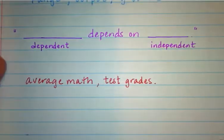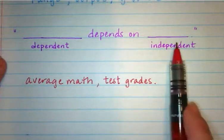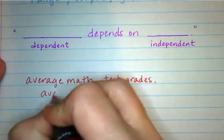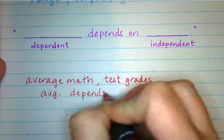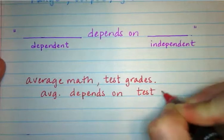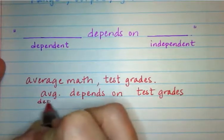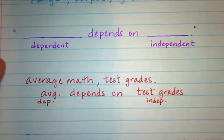So I think you'll agree that your average depends on your test grades. So since your average depends on your test grades, then this one is the dependent and this one is the independent.